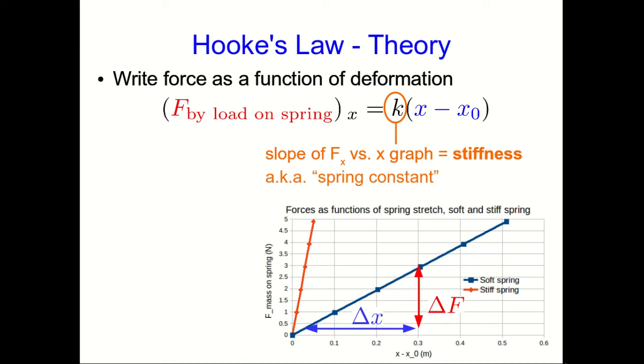You'll often see it called the spring constant but I prefer to call it the stiffness because that's more descriptive of what it means. And so if you look we see that our stiffer spring has come out with a higher stiffness than our soft spring. That makes sense and that's part of why we put the force on the vertical axis.